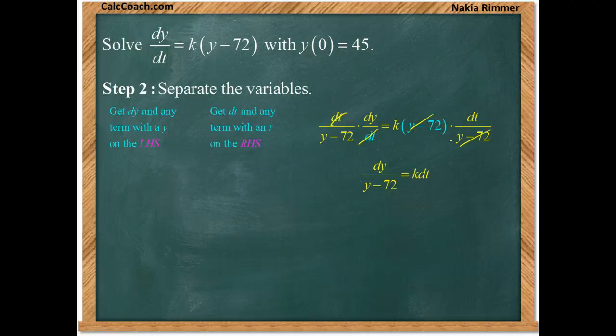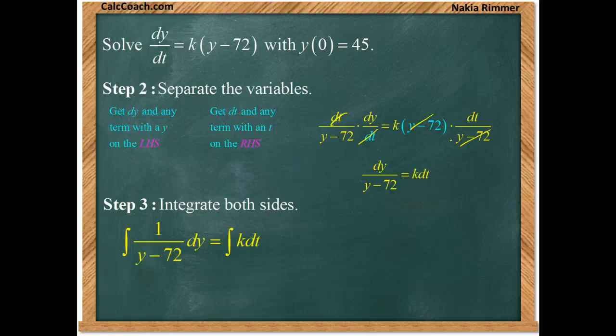The left hand will be the natural log of the absolute value of Y minus 72, and the right hand side will be KT plus a constant. All right, so we're almost done. Next step would be to find out what these constants are.